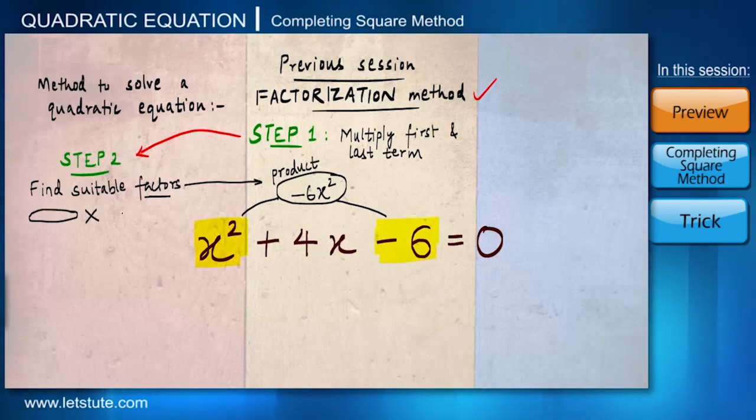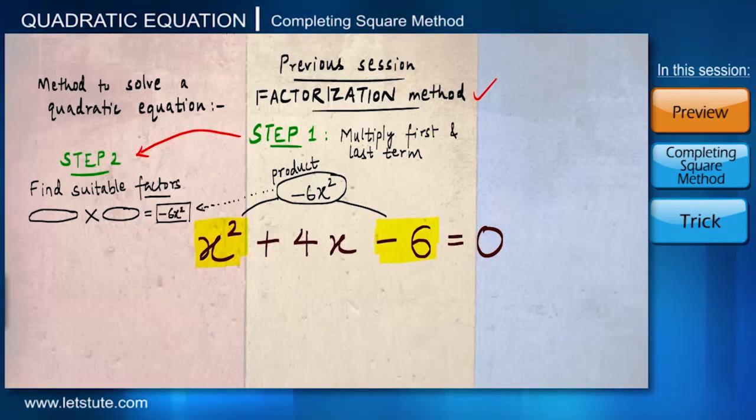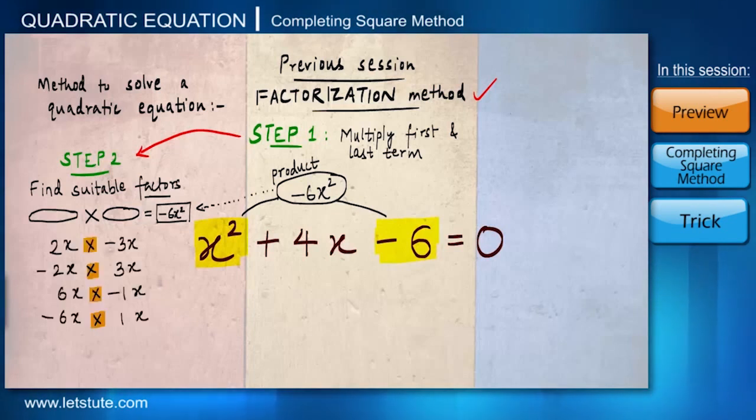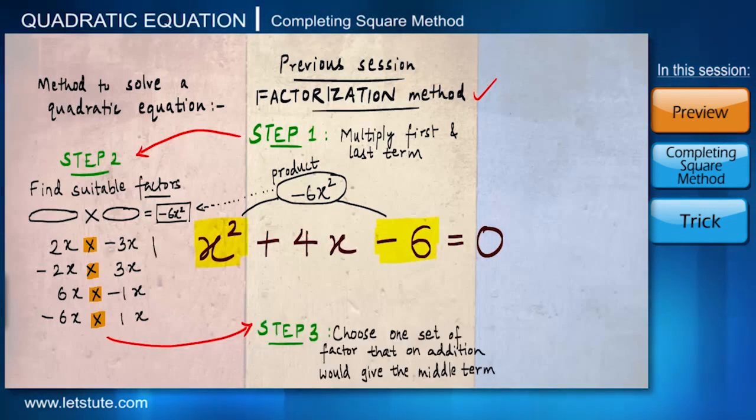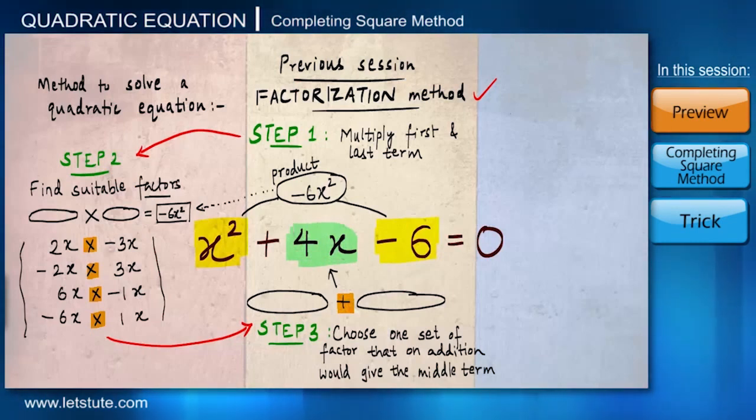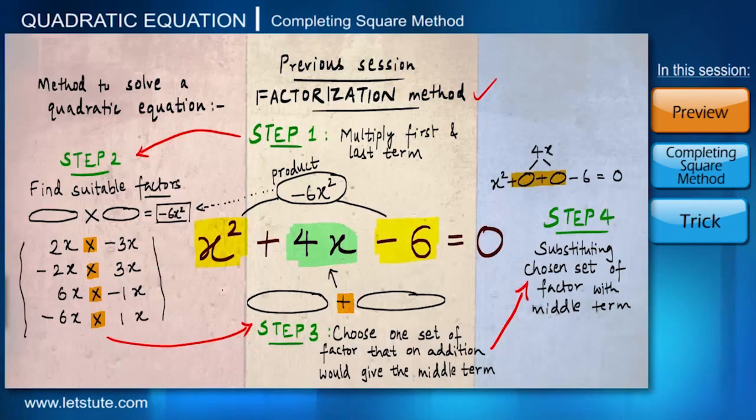We have discussed earlier what are factors. They are nothing but the numbers which are multiplied to give us another number. So over here, we will find factors for -6x². And we can only come across these four combinations of factors. Now, after we get all possible factors, step 3 would be to choose any one set of these factors that on addition would give us the middle term, which is 4x in this case.